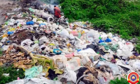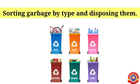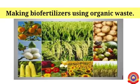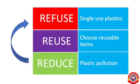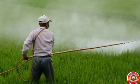Look at this — how can we dispose of these garbages? Yes: sorting garbage by type and disposing them, making bio-fertilizers using organic waste, and controlling the use of plastics and reusing them. You have studied about the harmful effects of using chemical pesticides.